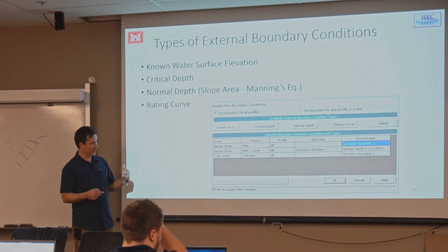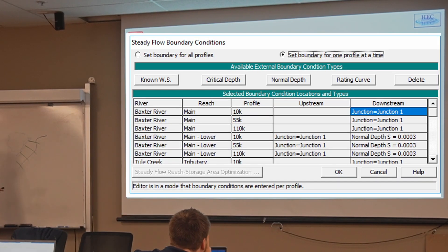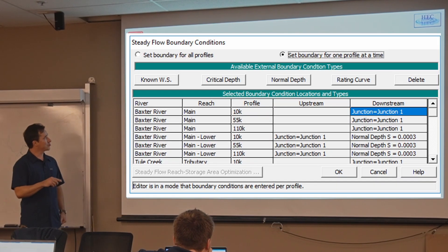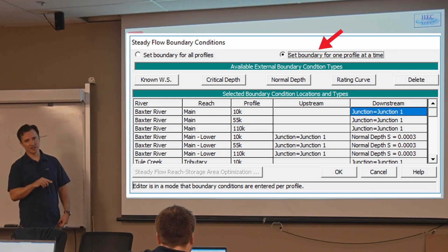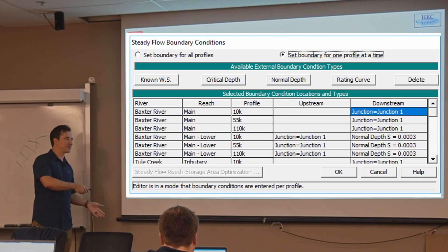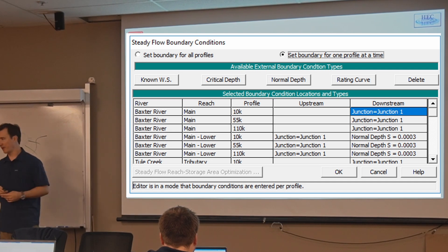Also, when you specify boundary conditions, you can do it for all the profiles here or one at a time. So let's say you have 15 flows that you want to run, steady flows. You can make them all normal depths. Or you can say, I want only these to be normal depths and these other profiles or flows to be a different kind of boundary condition. So it's kind of flexible that way.